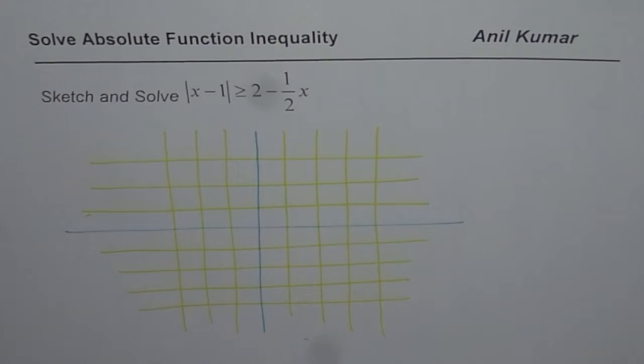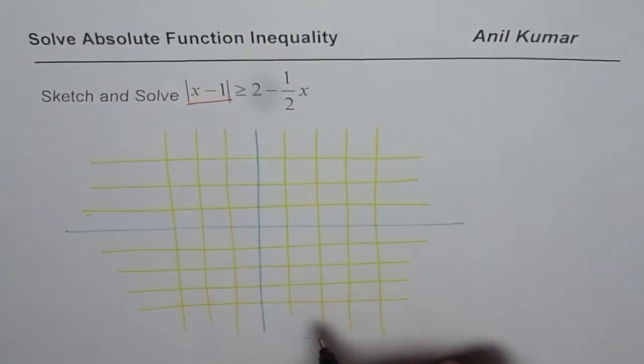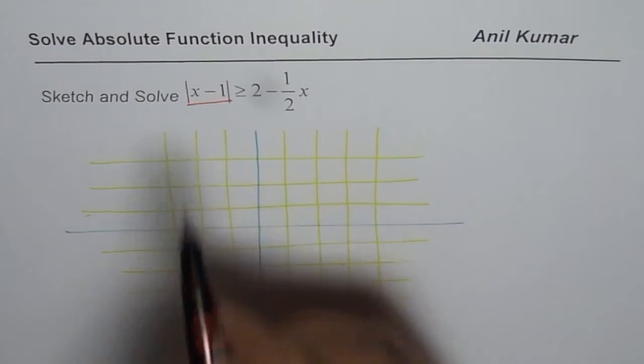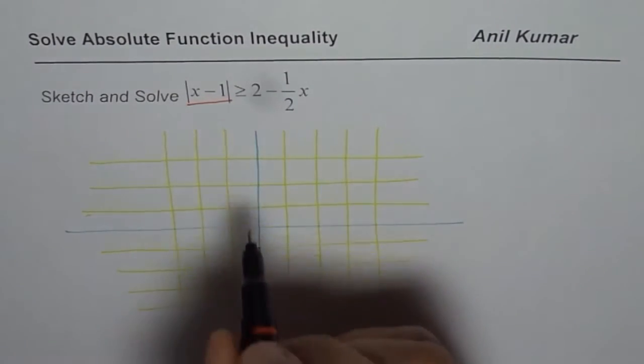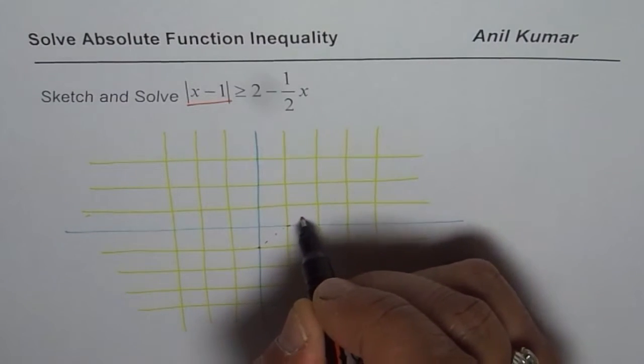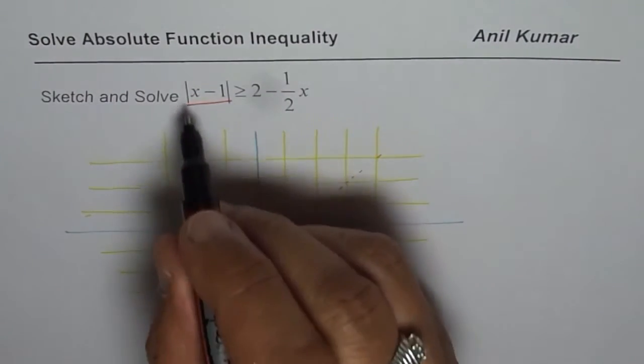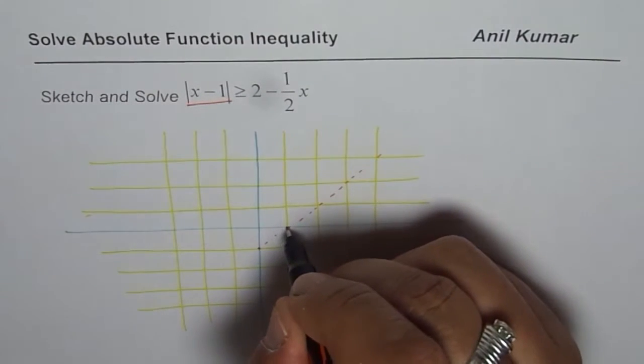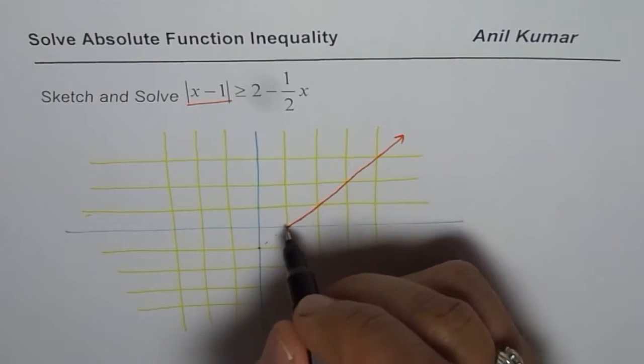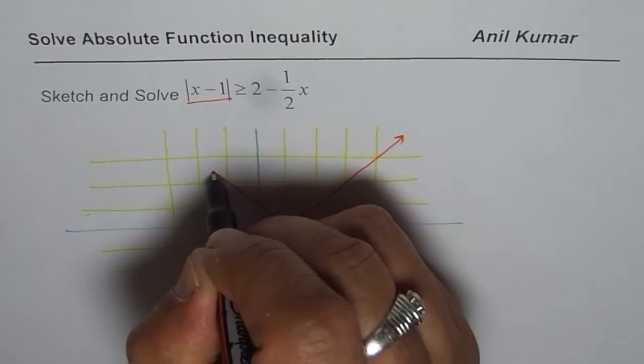We'll first sketch the function absolute value of x minus 1. To sketch this function we can think about a line with y-intercept of minus 1 and the slope of 1, so that is my line going like this. But what really happens when we say absolute value, we are considering only the positive portion and will reflect the negative side. So this side is reflected. That is our graph of absolute value of x minus 1.